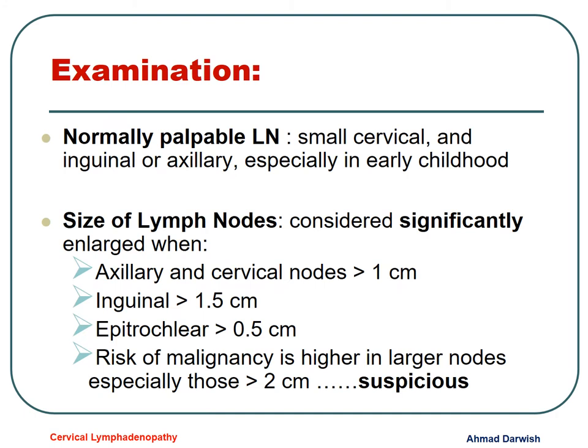Normally palpable lymph nodes include small cervical, inguinal, or axillary nodes, so palpable lymph nodes are not necessarily pathologic. The sizes that could be significant are axillary and cervical if more than 1–2 cm, inguinal more than 1.5 cm, epitrochlear if 0.5 cm, but any lymph node — whatever the site — if it is more than 2 cm should be considered suspicious.